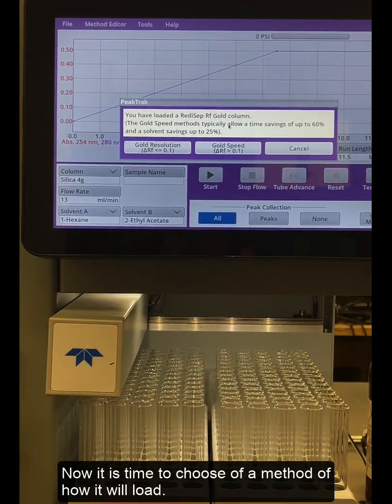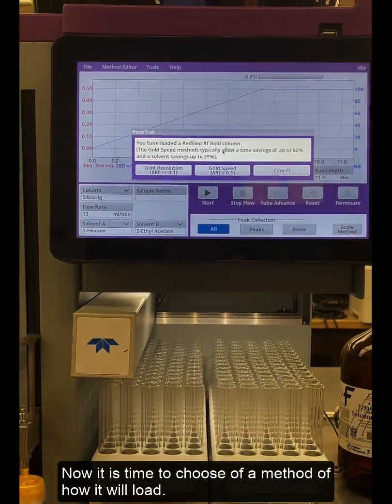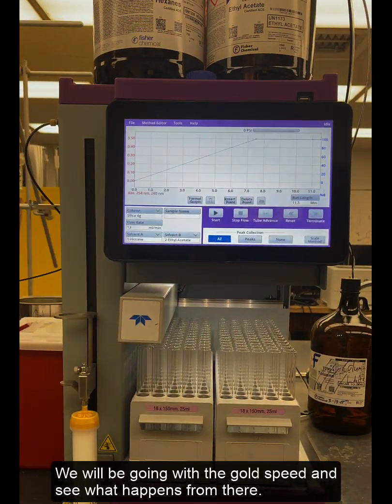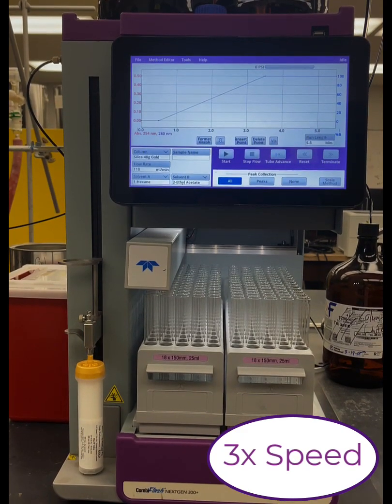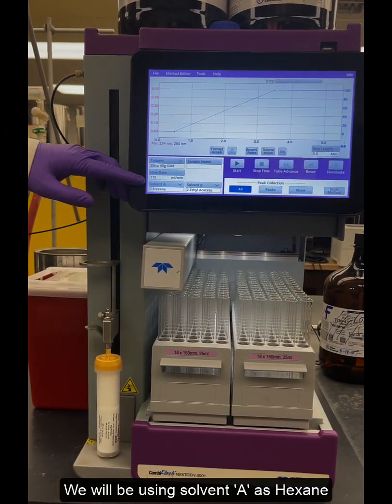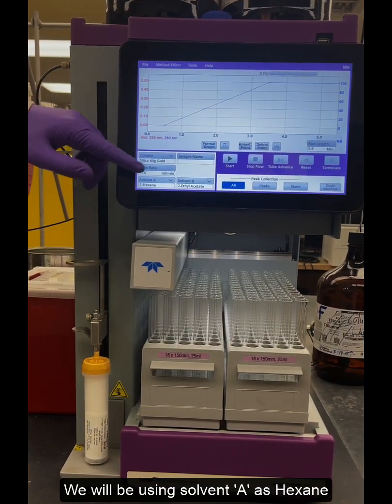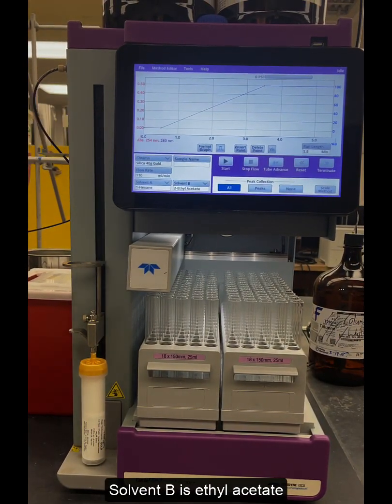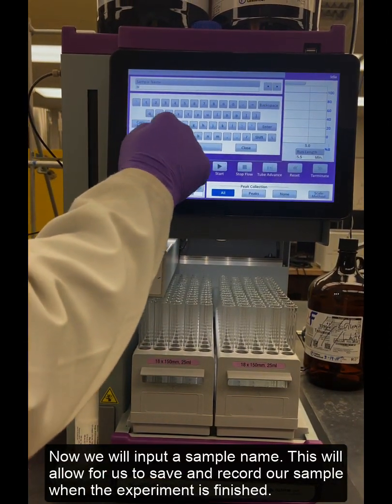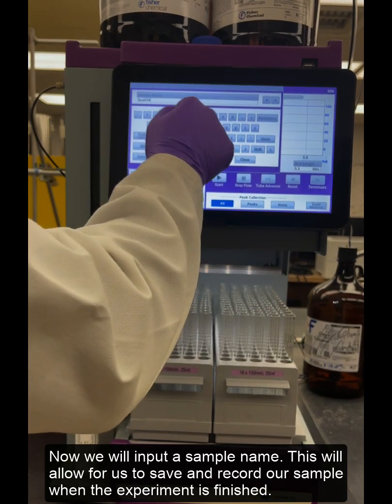Now it is time to choose a method of which how it would load. We will be going with the gold speed and see what happens from there. We will be using solvent A as hexane and right next to it solvent B is ethyl acetate. We'll be able to type in a name as a sample name which would allow us to save and record the sample when the experiment is finished.